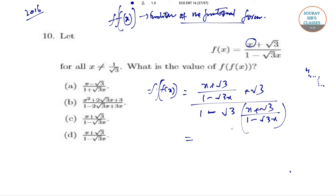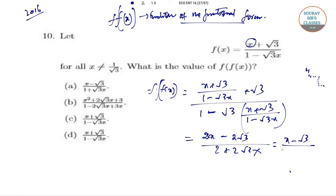After simplification, the (1 − root 3·x) terms cancel out, leaving 2x − 2·root 3 divided by 2 + 2·root 3·x, which simplifies to (x − root 3) / (1 + root 3·x). So the answer is option A.